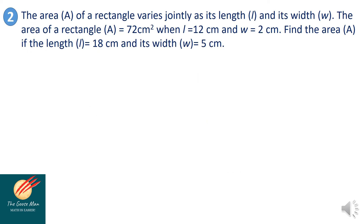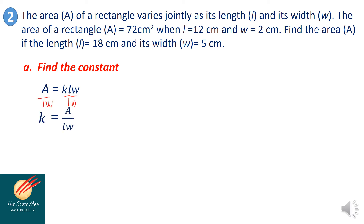Let's try another example. The area A of a rectangle varies jointly as its length and its width. The area of the rectangle is equal to 72 square centimeters, while L is equal to 12 centimeters and W is equal to 2 centimeters. Find the area A if the length L is equal to 18 centimeters and width W is equal to 5 centimeters. First, let's find the constant. We have A is equal to K times L times W. Dividing both sides by LW, the area all over LW equals K. Substituting: 72 all over 12 times 2 gives us 72 all over 24, so K is equal to 3.